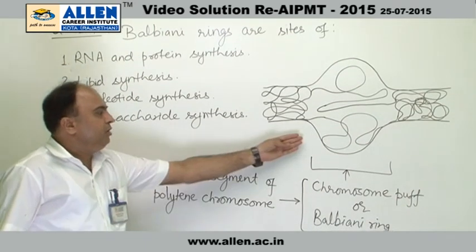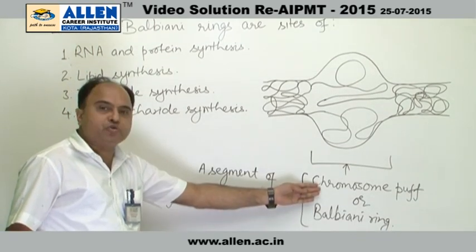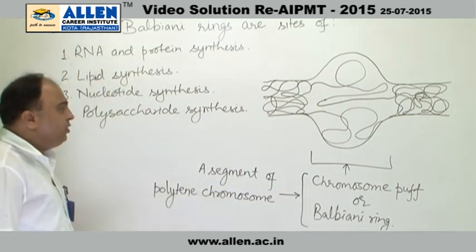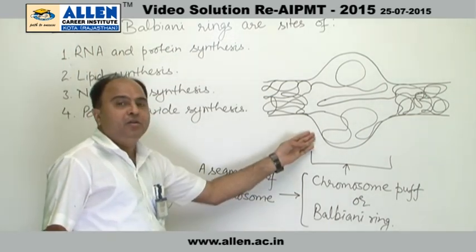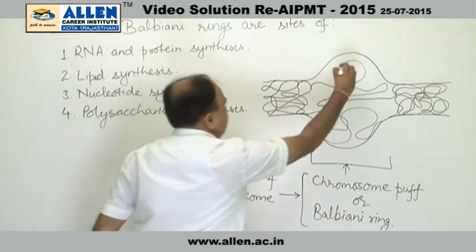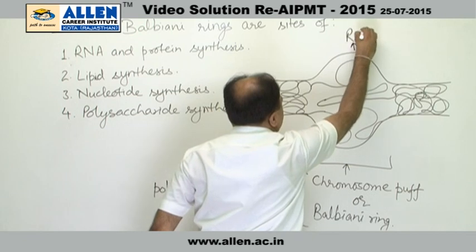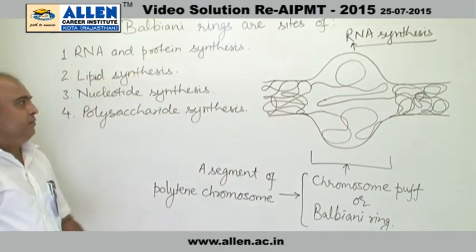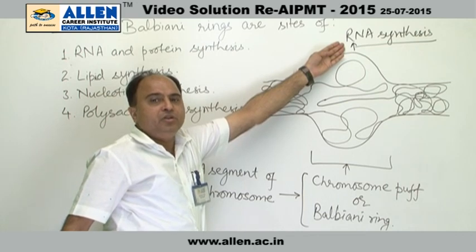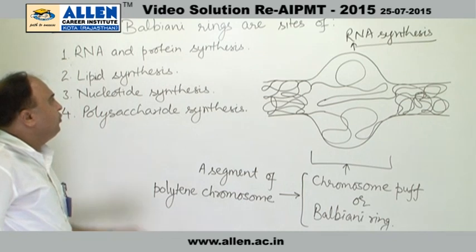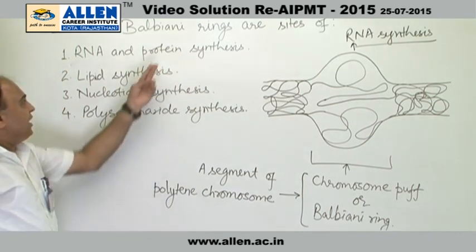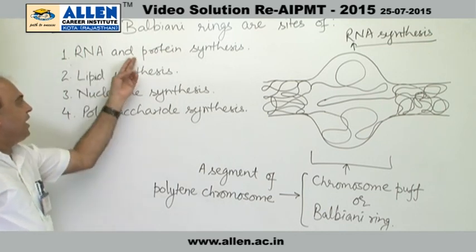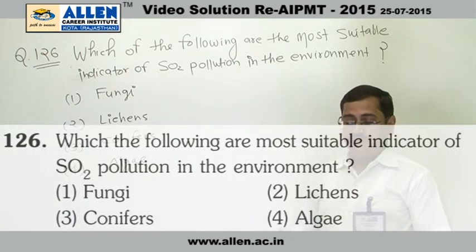In these less condensed segments — called chromosome puffs or balbiani rings — when DNA is available in less condensed form, these positions provide the site for RNA synthesis. RNA synthesis takes place at these positions, and once RNA synthesis has occurred, this RNA is then used for the purpose of protein synthesis. So the answer for this question is RNA and protein synthesis.